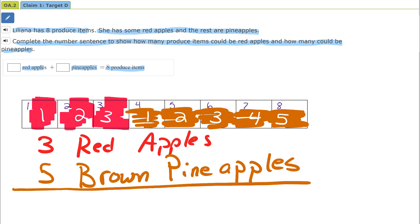And how much fruit do we have all together? We have eight produce items. So one answer to this problem could be three red apples plus five pineapples will equal eight produce items.